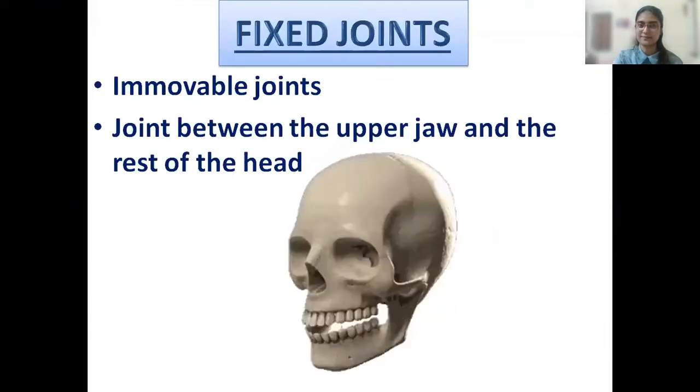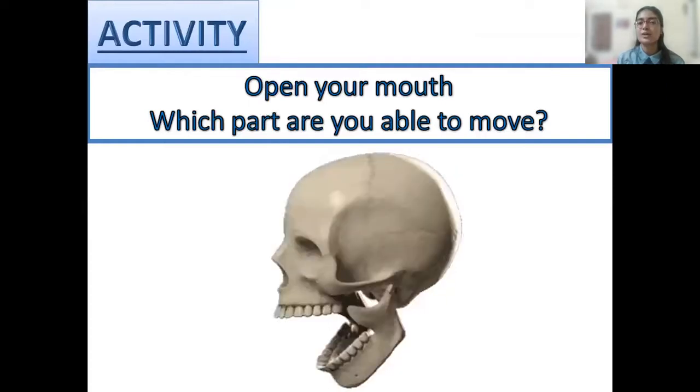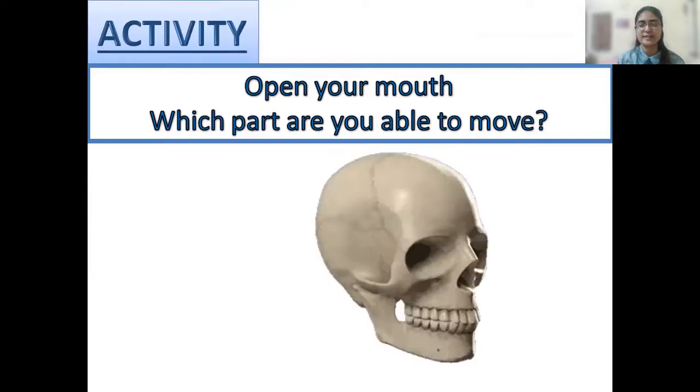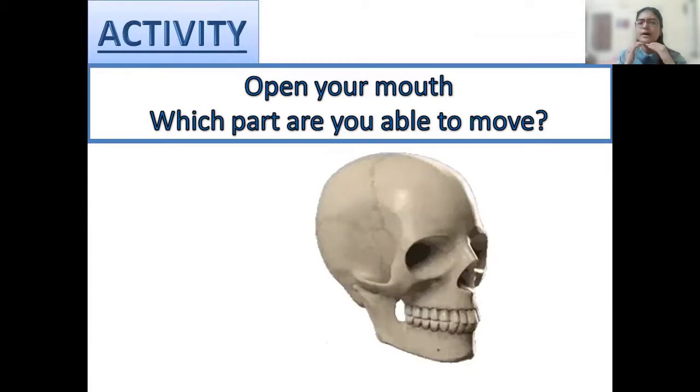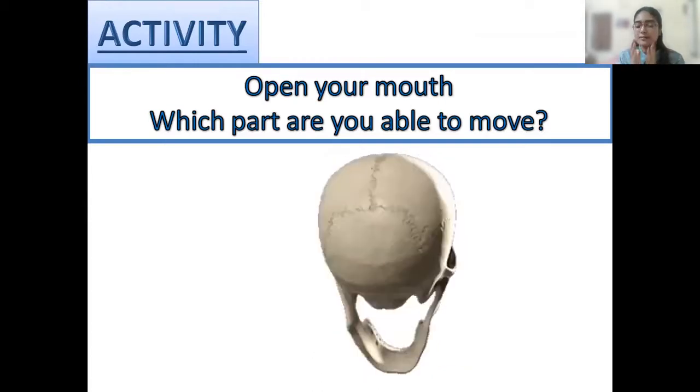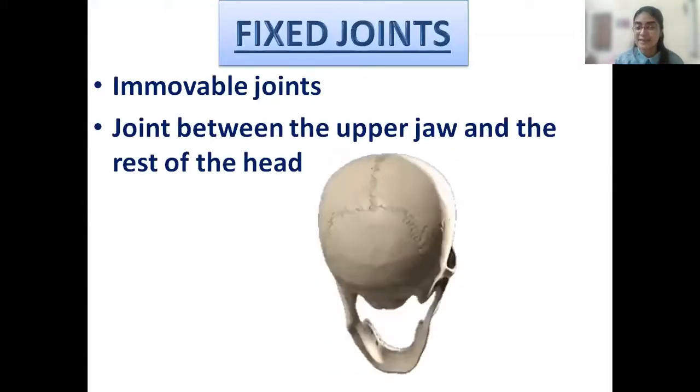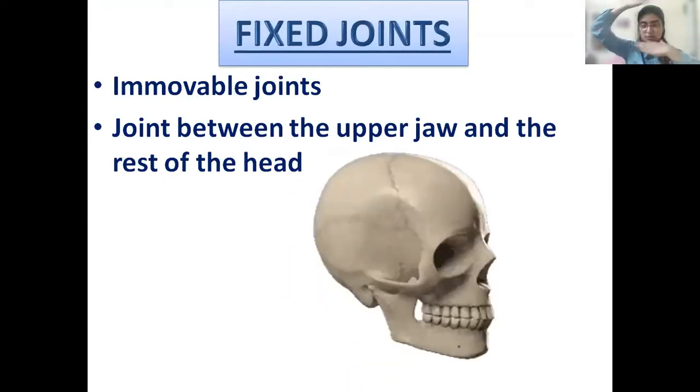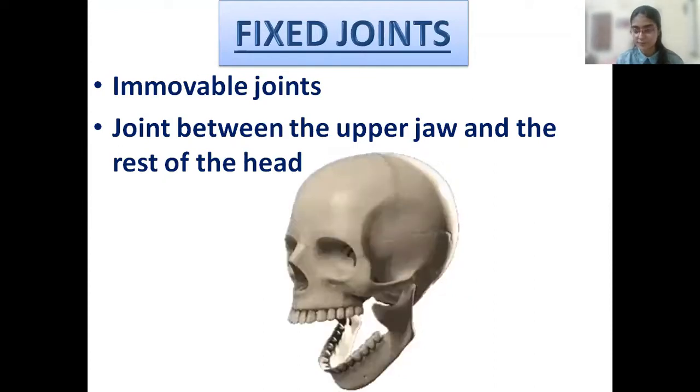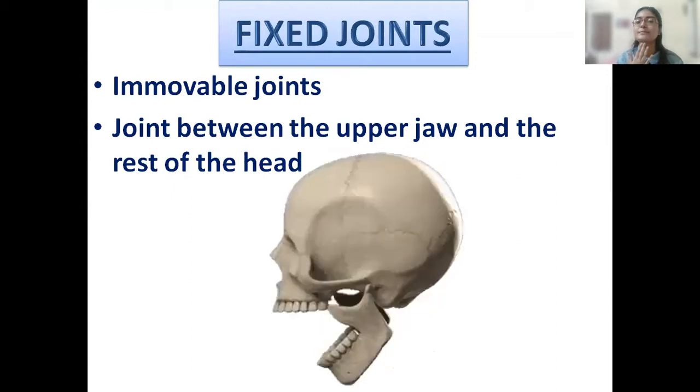We will learn about one more. Okay? Now, are you able to open your mouth? Which part are you moving? Tell me. You can only move this part, right? What is this? The lower jaw? Very good. So, this is known as fixed joint. Because from this to this part, you are not able to move. Are you? Try. Only this part is coming down. But this to this part is not moving.